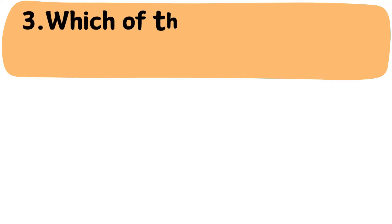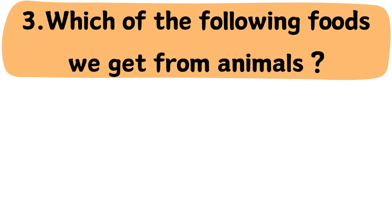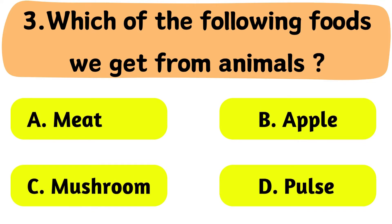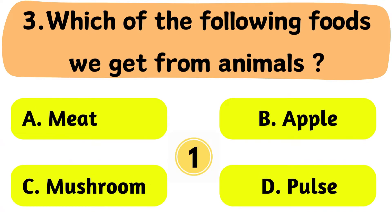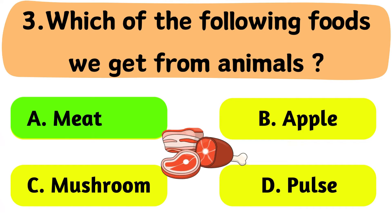Question No. 3: Which of the following foods do we get from animals? A. Meat. B. Apple. C. Mushroom. D. Pulse. The correct answer is Option A: Meat.